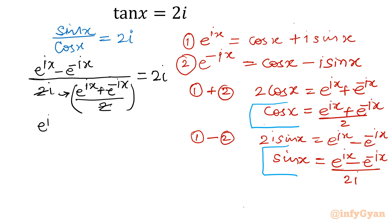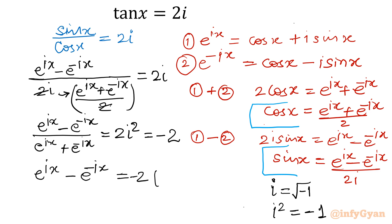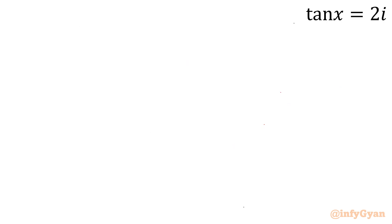I will multiply both sides by i. The left side becomes (e^(ix) − e^(−ix)) / (e^(ix) + e^(−ix)), and the right side becomes 2i² = 2(−1) = −2, since i = √(−1) so i² = −1. Therefore e^(ix) − e^(−ix) = −2(e^(ix) + e^(−ix)). Expanding: e^(ix) − e^(−ix) = −2e^(ix) − 2e^(−ix).